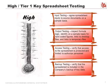For a high or Tier 1 spreadsheet, we test the inputs by agreeing the spreadsheet inputs to source documents on a sample basis. We also test the output by inspecting the formula logic, identifying hard-coded figures, links to desktop files, and links to temporary files on a sample basis. We test access — who has access, is it password protected, is it limited to selected people? Even with good intentions, someone can accidentally delete a linked cell and completely break all the formulas.